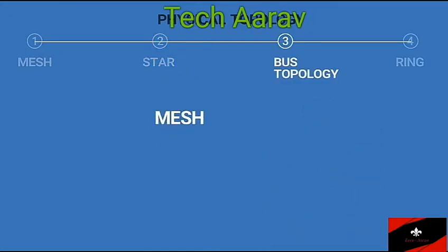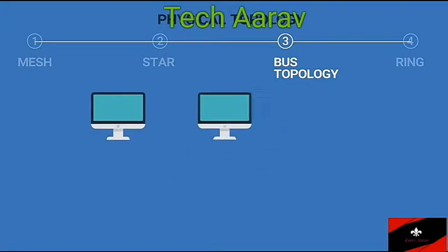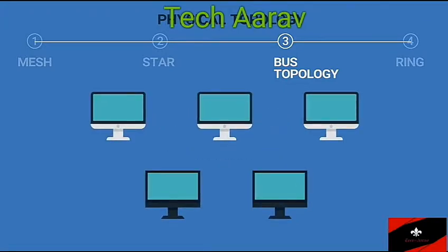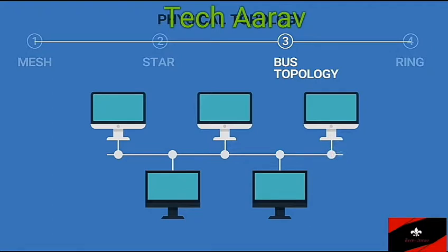Bus topology: The mesh and star topologies use point-to-point connections. The bus topology, on the other hand, is multipoint. One long cable is used to link all the devices in a network. Each device is connected to a tap attached to the long cable. As a signal travels along the cable, some of its energy is transformed into heat; therefore, the signal becomes weaker and weaker as it travels farther. That is why there is a limit on the number of taps a bus can support and on the distance between those taps.